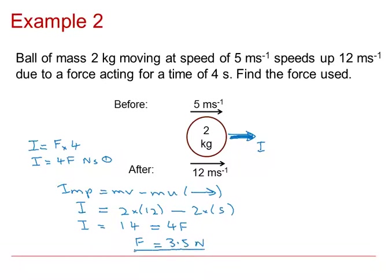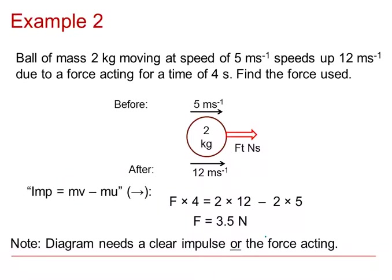And that force, like the impulse, was to the right. Note: because we're dealing with vector quantities, your diagram should always be clearly labelled with either an impulse I or the force that has created the impulse. Make sure it's clear what is labelled with an arrow on your diagram.